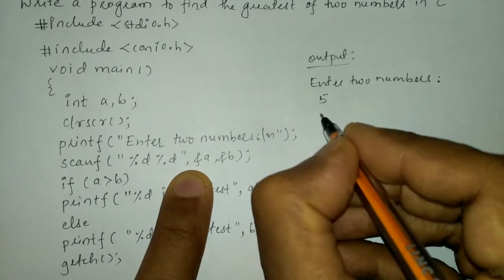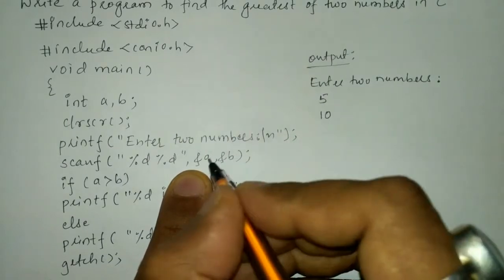For example I am going to enter 5 and the second number is 10. So a will be stored.